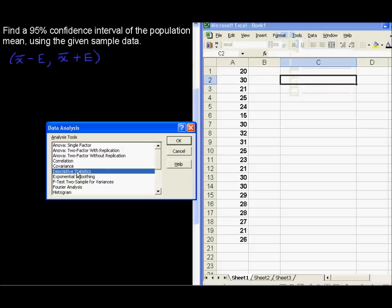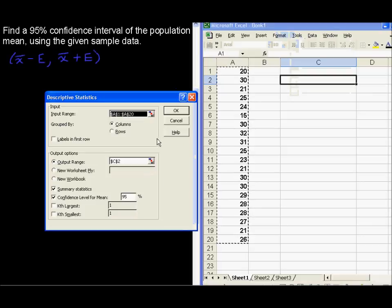We're going to use descriptive statistics. We say OK. Now, at this point, we are going to choose all of the input that we have, all of the data. So it's already chosen that for me because that's the only thing I have on the screen. If it doesn't choose it for you, of course, just choose it there.